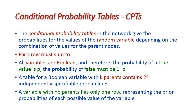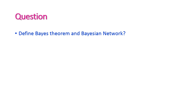A table for a boolean variable with k parents contains 2^k independently specifiable probabilities. A variable with no parents has only one row representing the prior probabilities of each possible value of the variable. That covers Bayesian networks.